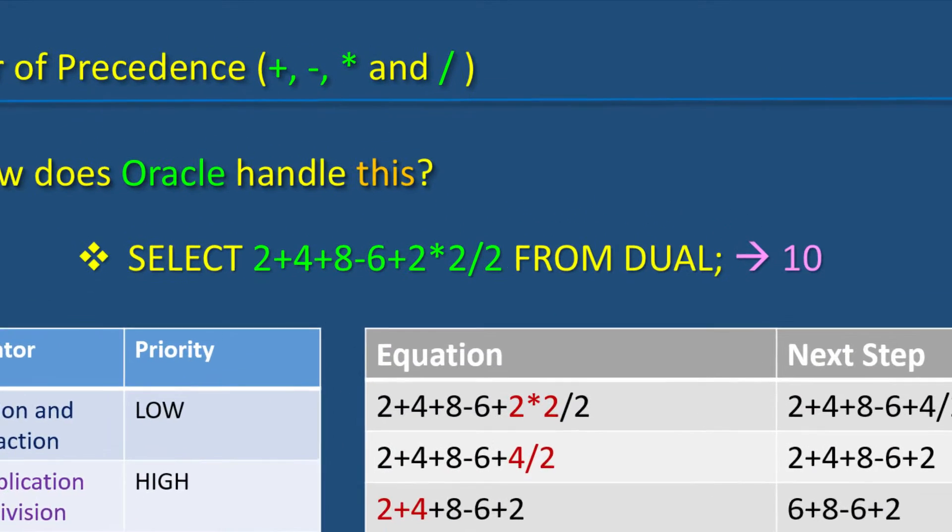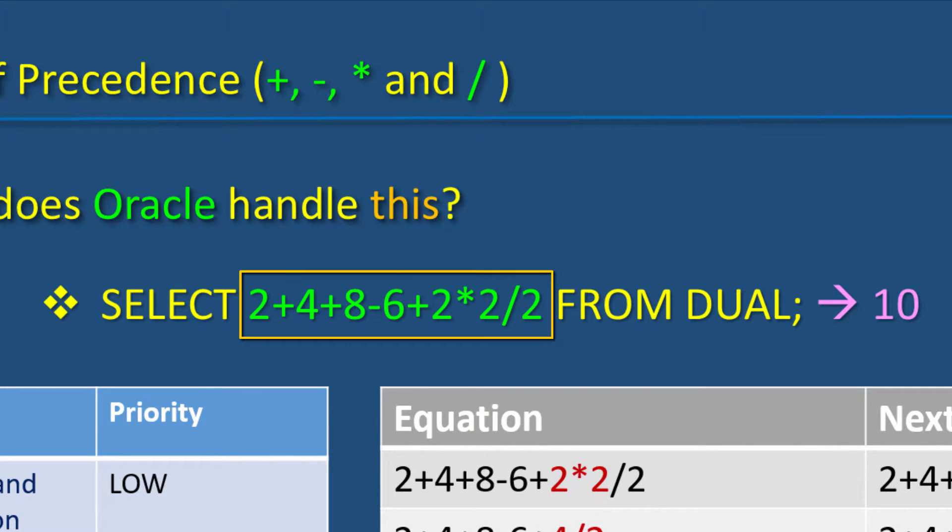What this means is, in an expression such as this, 2 plus 4 plus 8 minus 6 plus 2 times 2 divided by 2, multiplications and divisions are calculated first. But wait. I see multiplication here and division here. They are of same priorities. Which one gets precedence among those two? Answer, the one in the left.